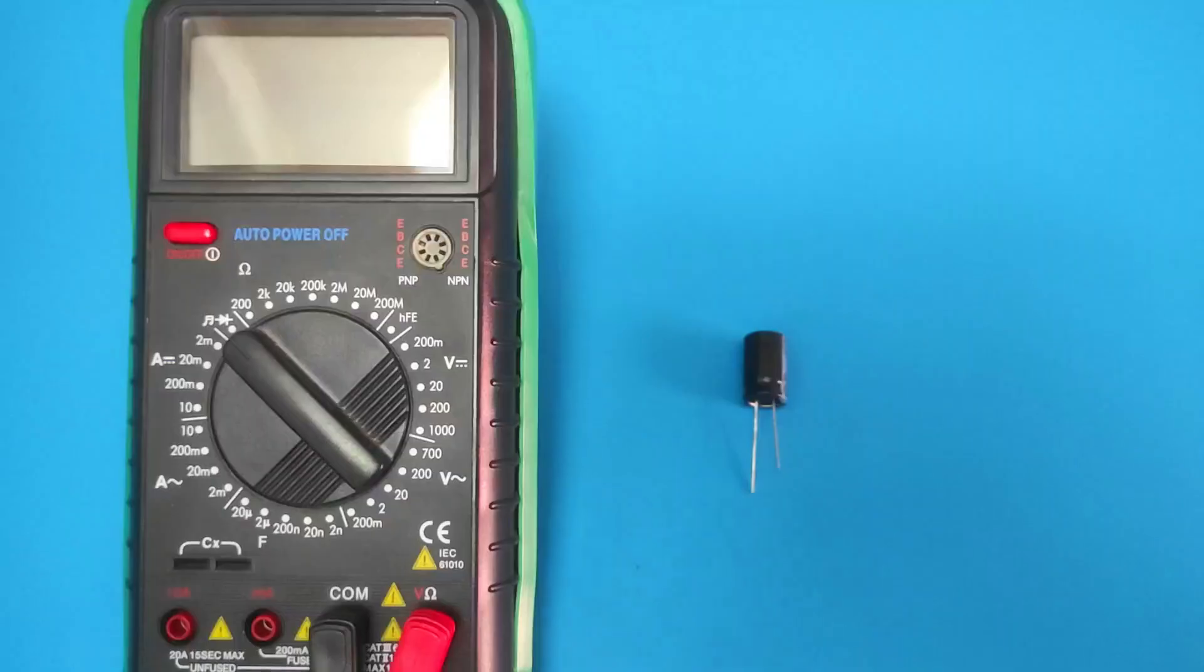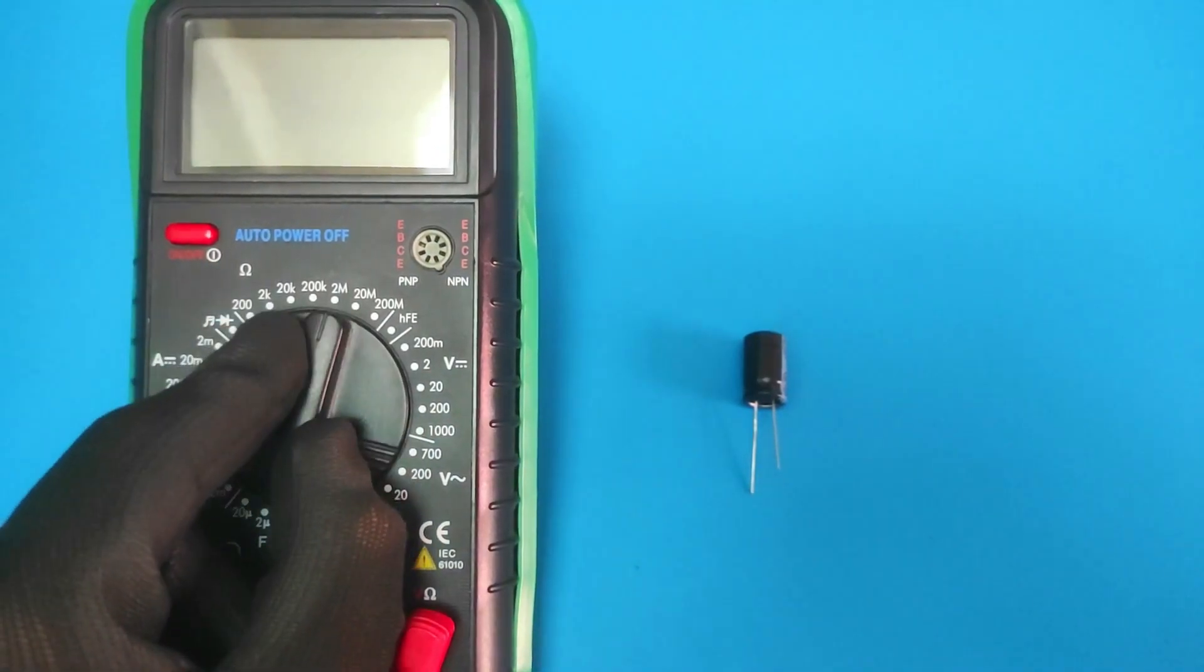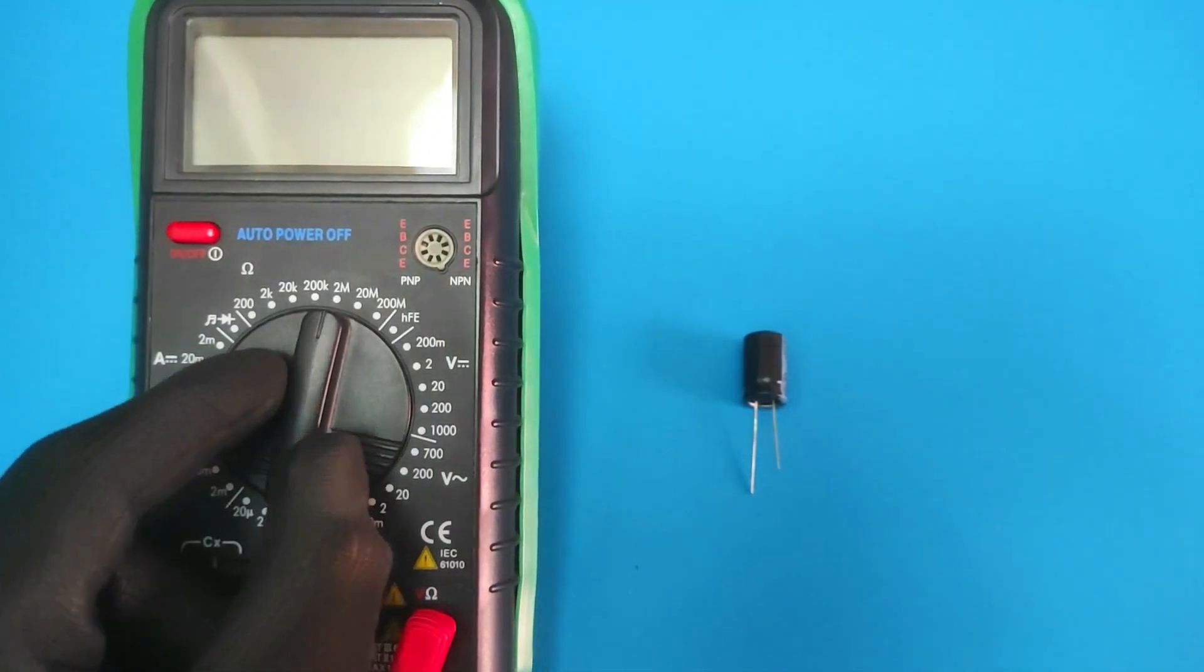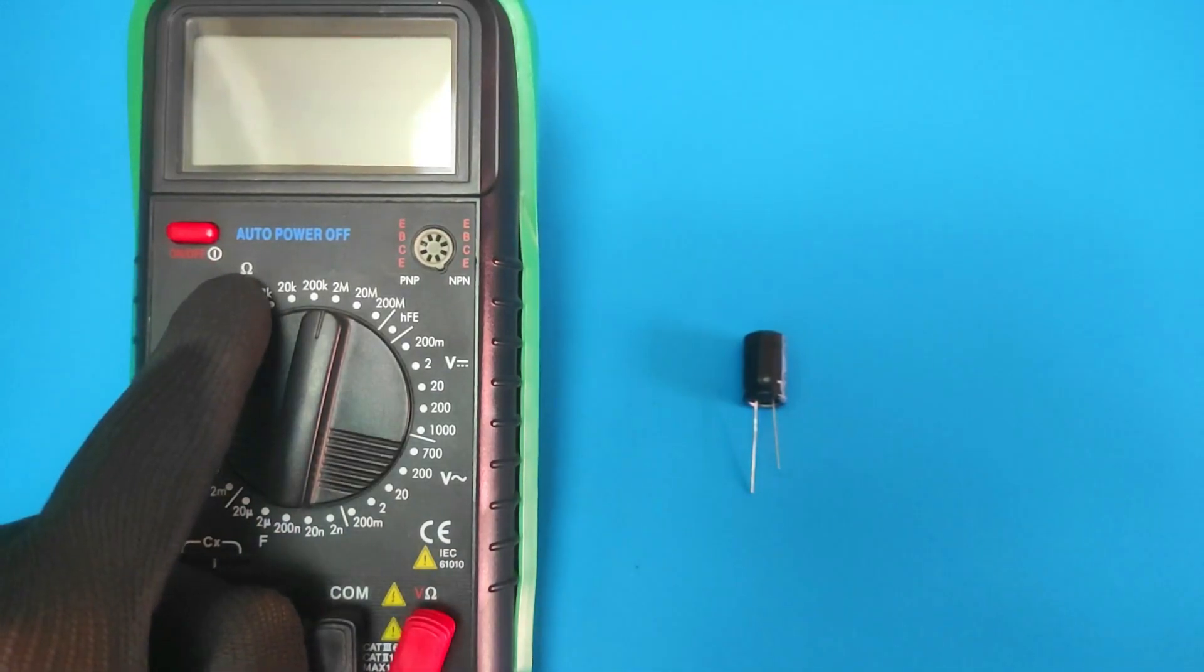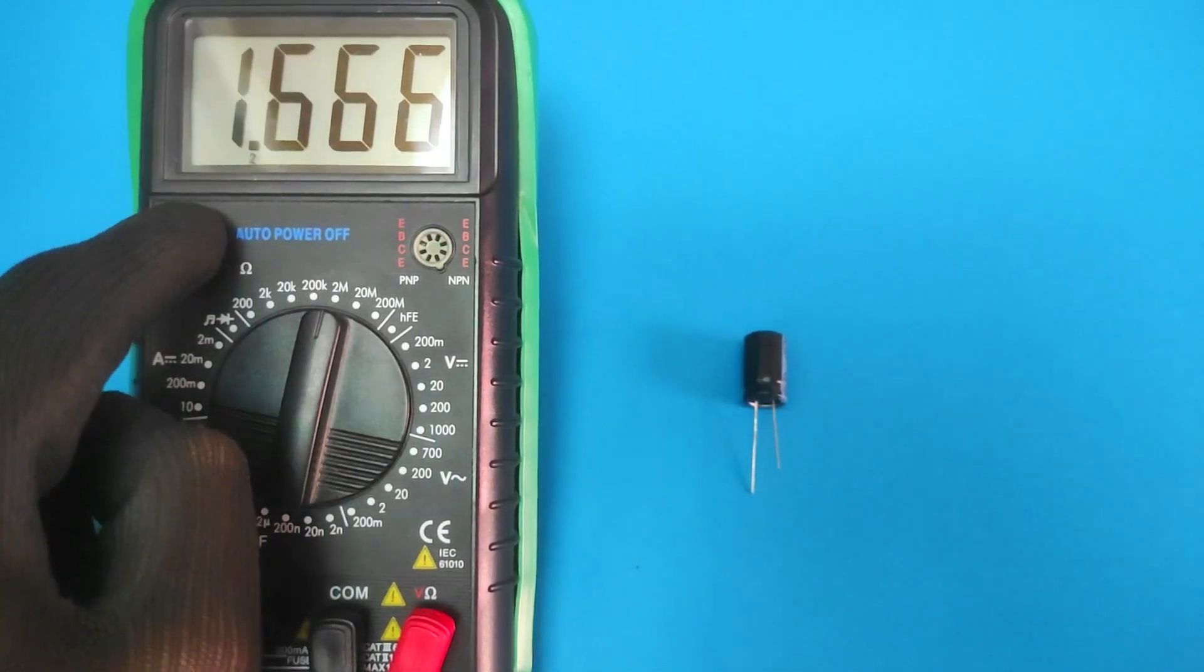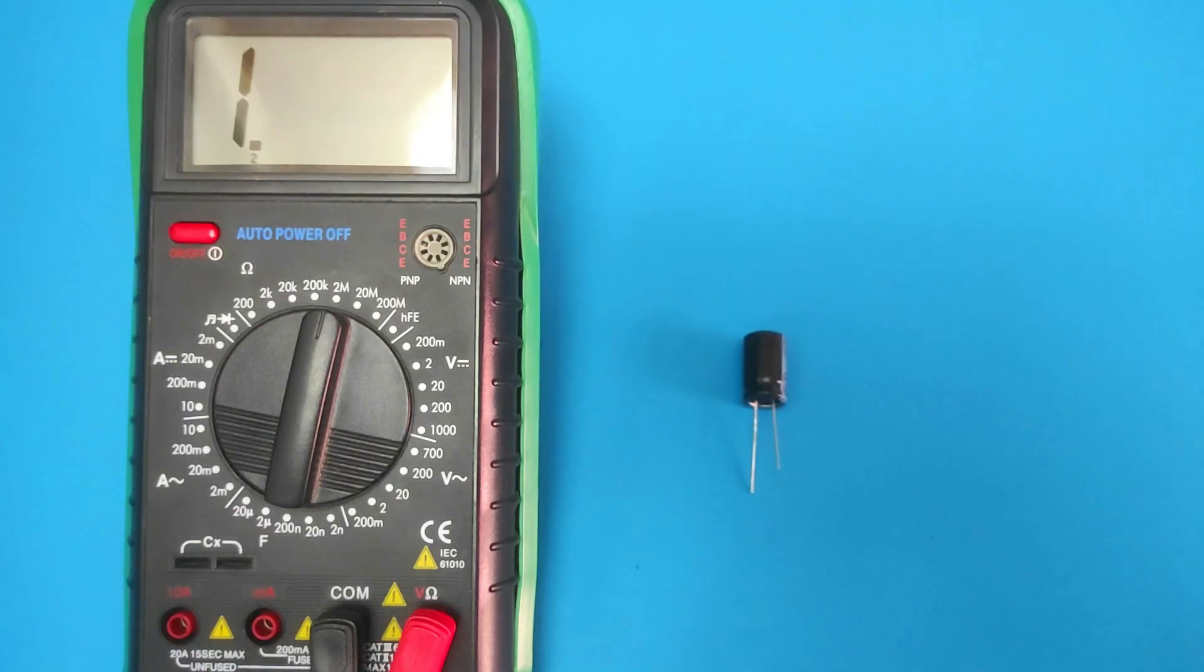The third step is to set the multimeter to measure resistance. The 2 mega ohms range is the most preferred option, as you may get an infinity reading immediately after you run the final step of our test.